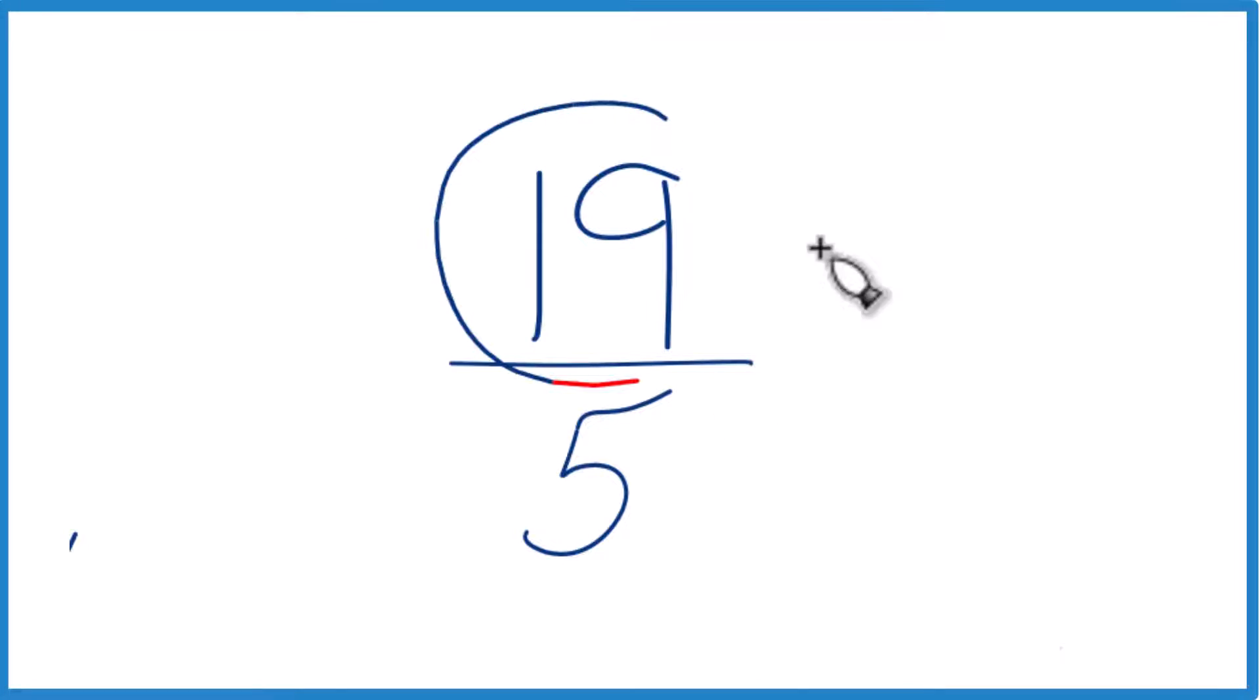Let's write the fraction 19 fifths as a mixed number. So first off, we really can't simplify 19 fifths. It's already in its lowest terms, but we can write it as a mixed number.